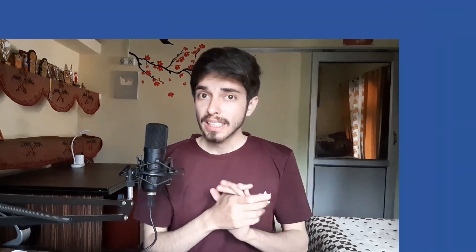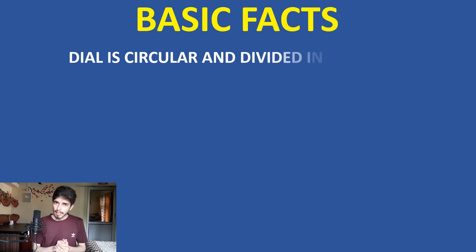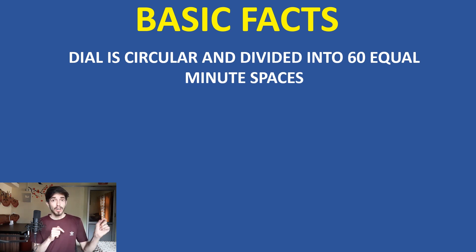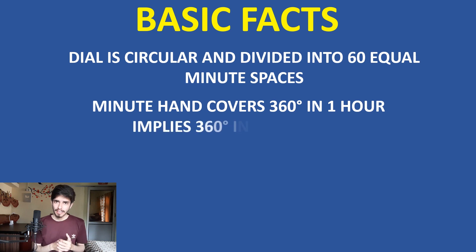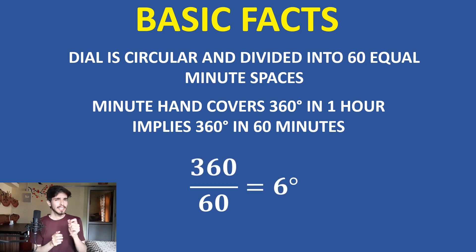Let's come back to the video. To solve clock hand problems, let us start by learning some straightforward facts. The dial of the clock is circular in shape and is divided into 60 equal minute spaces. A minute hand covers 360 degrees in one hour — that means 360 degrees in 60 minutes. So dividing these two, we get 6 degrees per minute.